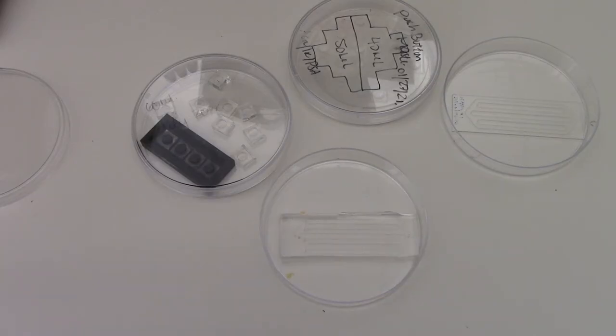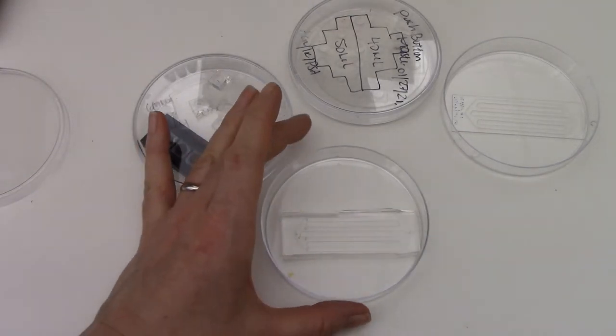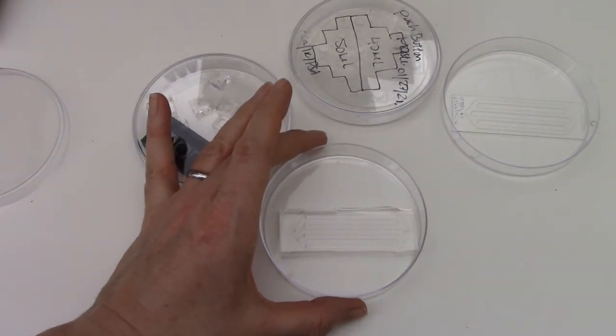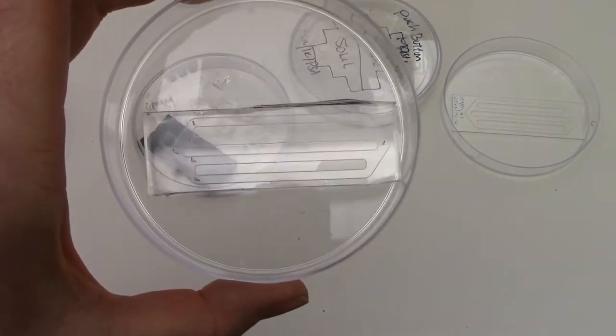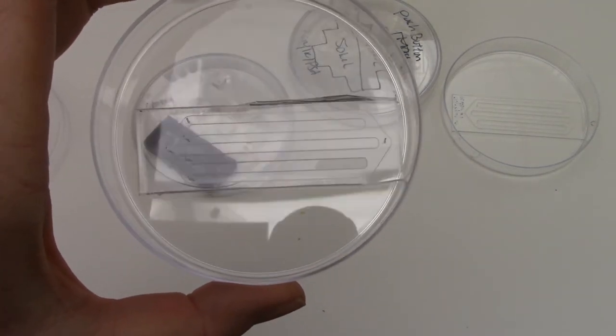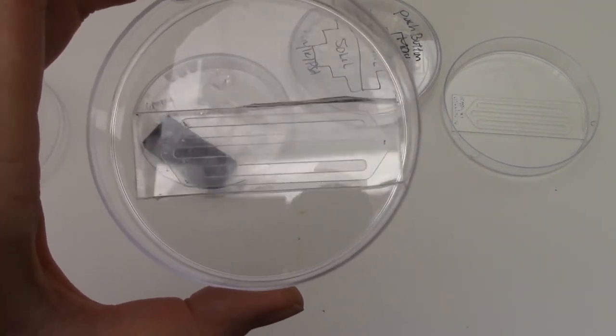Today we're going to show you how to make a PDMS microfluidic device. PDMS is a crosslinked polymer that is poured over a mold to make channels, microfluidic channels, in your device.